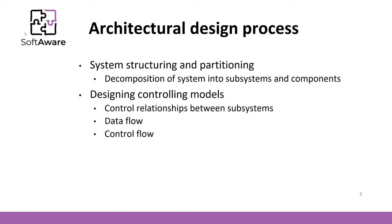When designing our system, we structure it by decomposing the system into smaller subsystems and components, creating a static model of the system. We also define the dynamic relations between subsystems and components. We may provide details on how control is passed from one component to another, and describe our data entities and the flow of data between processing components.